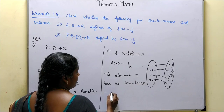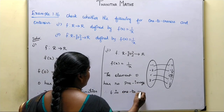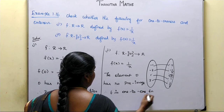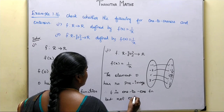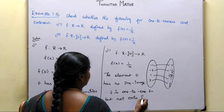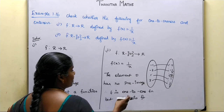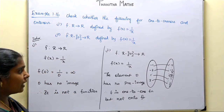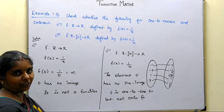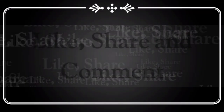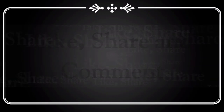Therefore, f is a 1-to-1 function but not an onto function, since the range is not equal to the codomain. The element 0 in the codomain has no preimage, so onto is not satisfied. That is the complete solution. Thank you.